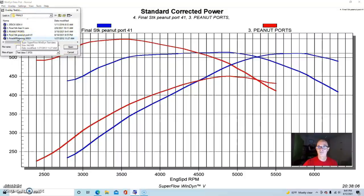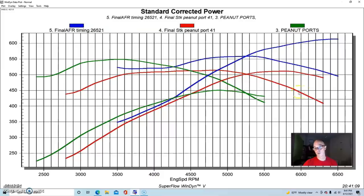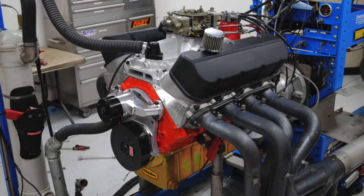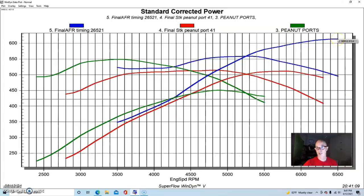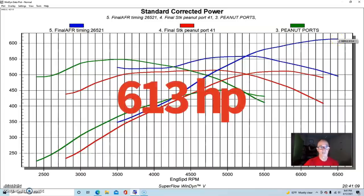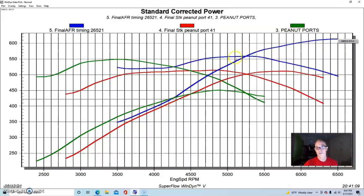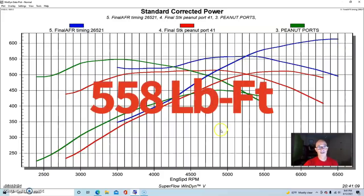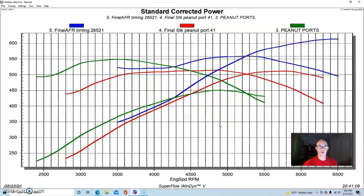To give you an idea how much the peanut port heads were restricting this combination, here's what the motor did when we put a set of Airflow Research 265 oval port heads on it. The power output jumped up like 100 horsepower, 613 horsepower. Peak torque was way up but it was shifted out quite a bit. Peak torque was 558 foot pounds. So with a good head this combination was obviously working a lot better than with the peanut port head, but it's possible to make over 500 horsepower with a peanut port. You just have to decide, would I be better off maybe not trying to make that kind of peak power and looking more at the torque and the power production down below 5000 RPM.